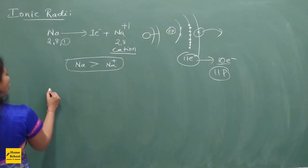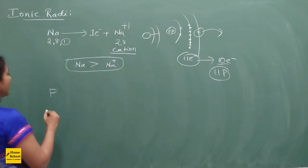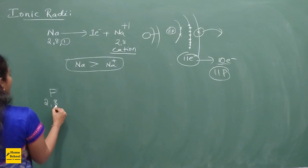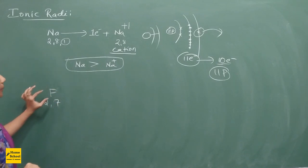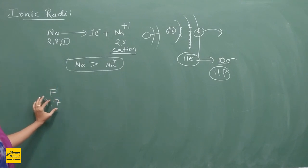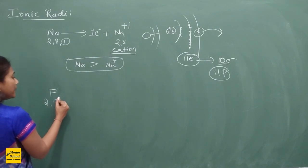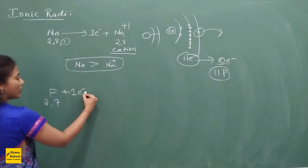Now if you take a non-metal like fluorine (F), it has the electronic configuration 2, 7 — atomic number 9. It becomes stable if it accepts one electron. One extra electron is added. It had 9 protons and 9 electrons initially, but now one electron is added.